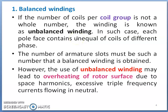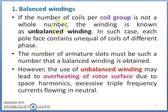Balanced winding is designed in the case of a machine. If the number of coils per coil group is not a whole number, this arrangement is referred to as unbalanced winding. In such a case, in each whole phase, unequal coils of different phases will occur, and this is referred to as unbalanced winding.